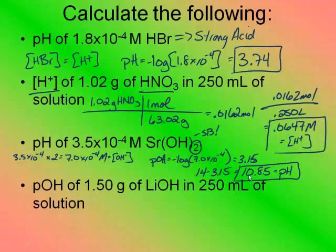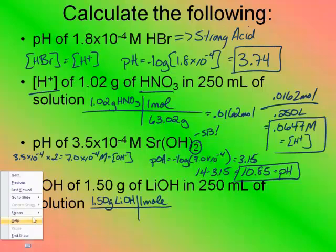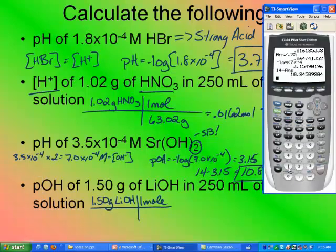Now let's solve the last one. It wants me to solve the pOH of 1.50 grams of lithium hydroxide in 250 milliliters of solution. Lithium hydroxide is a strong base. So when I find the concentration of it, that will be equal to the concentration of OH-. Lithium hydroxide is 16 plus 1.01, which is 17.01. The mental math is failing me right now. Lithium hydroxide plus 6.94 is the weight of lithium is 23.95.